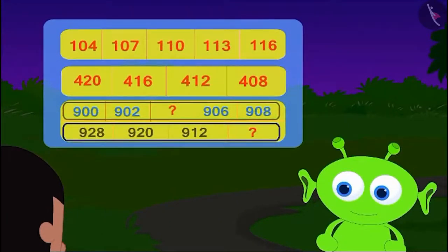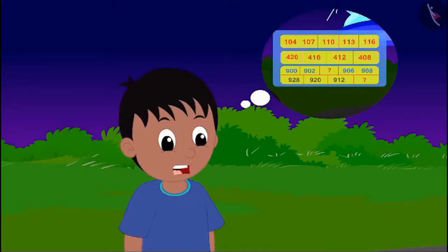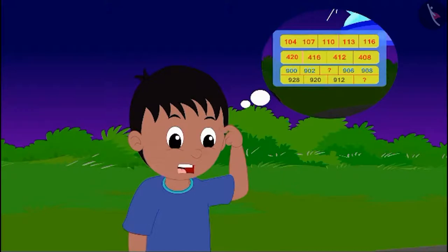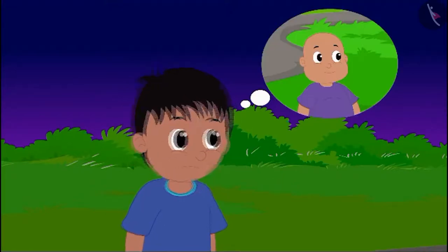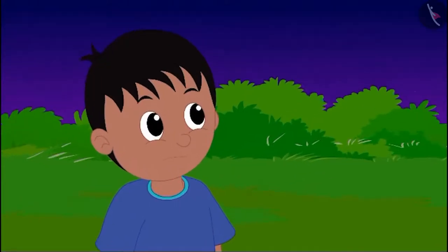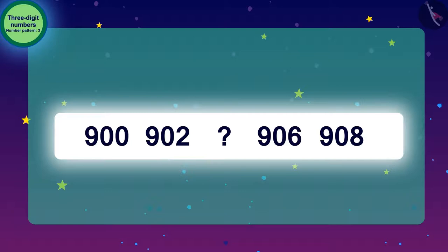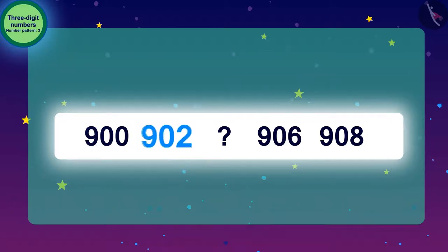The alien showed Raju two number patterns and asked: what is the number that can be written in the empty spaces of both patterns? Raju was nervous after seeing two patterns, but he needed to save Bablu under any condition. Let's help Raju! We will first find the number pattern — to get to 902, we have to add 2 to 900.